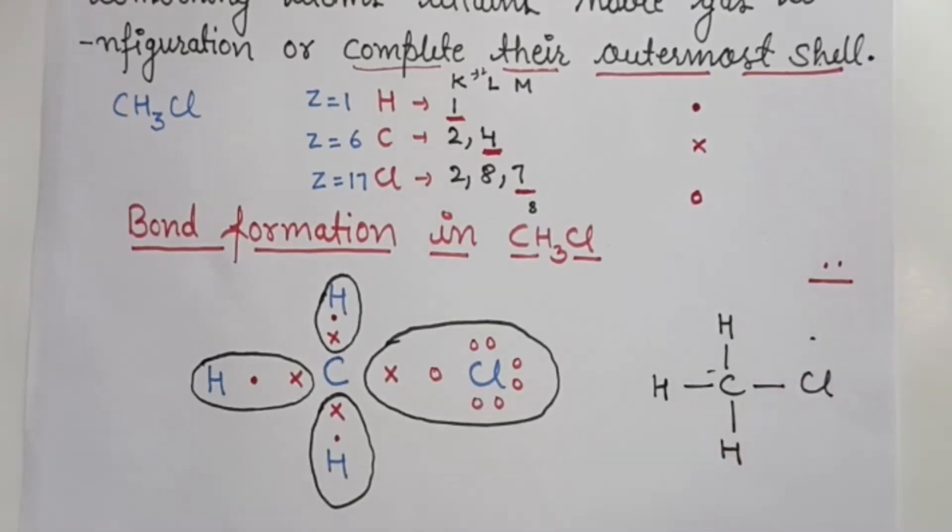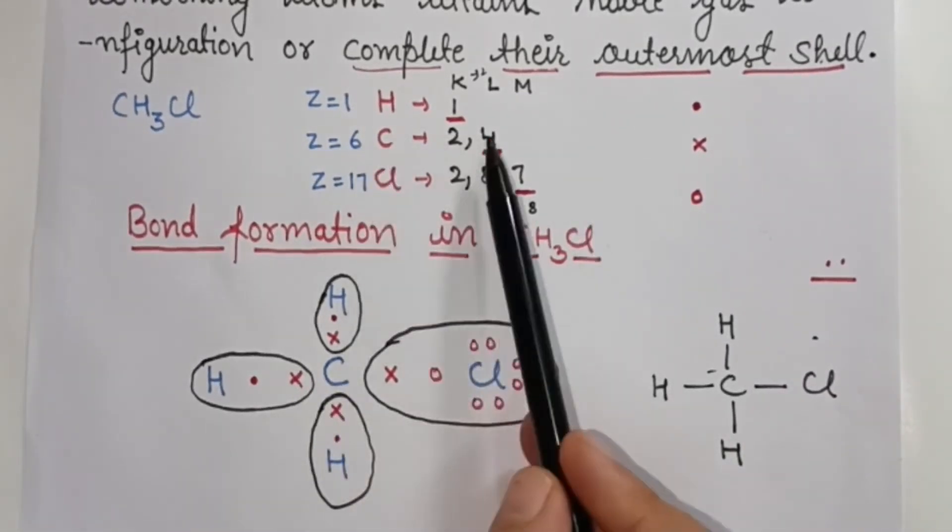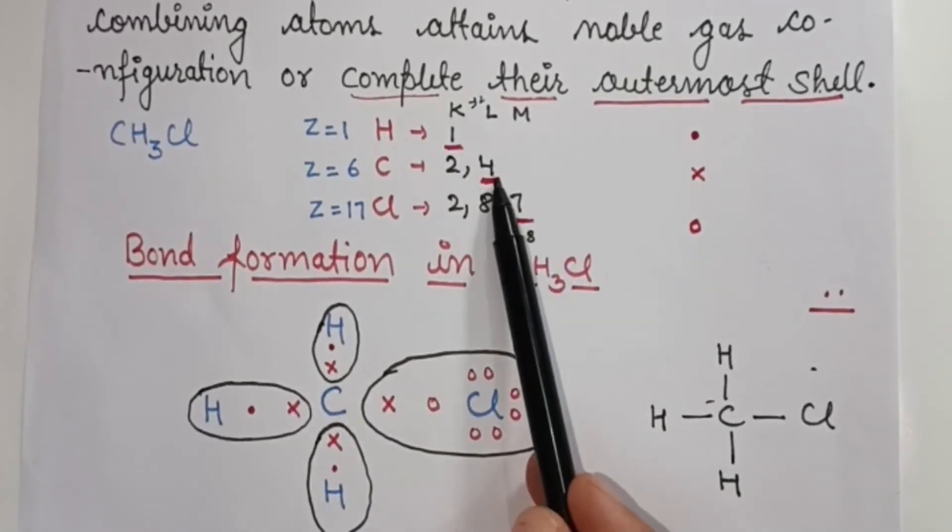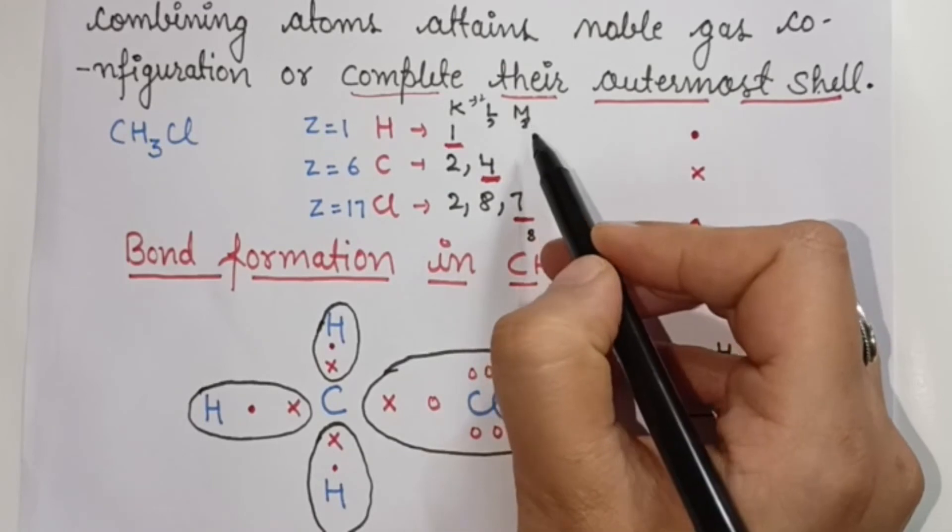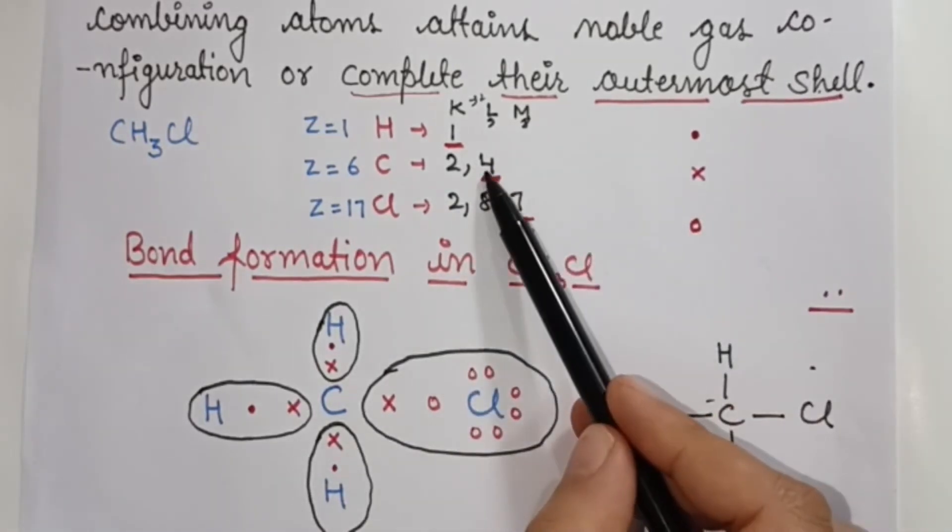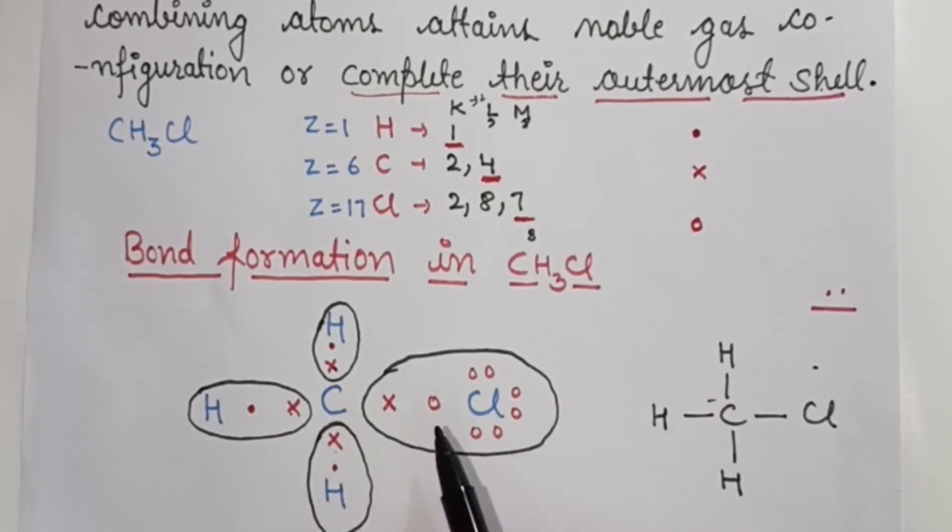So where do we get that 1 from? From carbon. This will share with carbon, so chlorine has also made 1 bond. From carbon's point of view, carbon has 4 valence electrons but in this shell we can accommodate maximum 8.